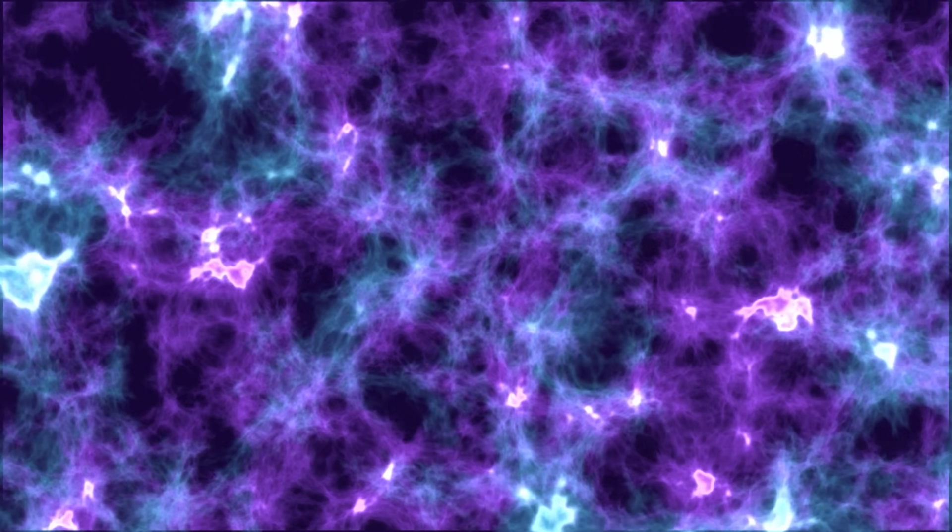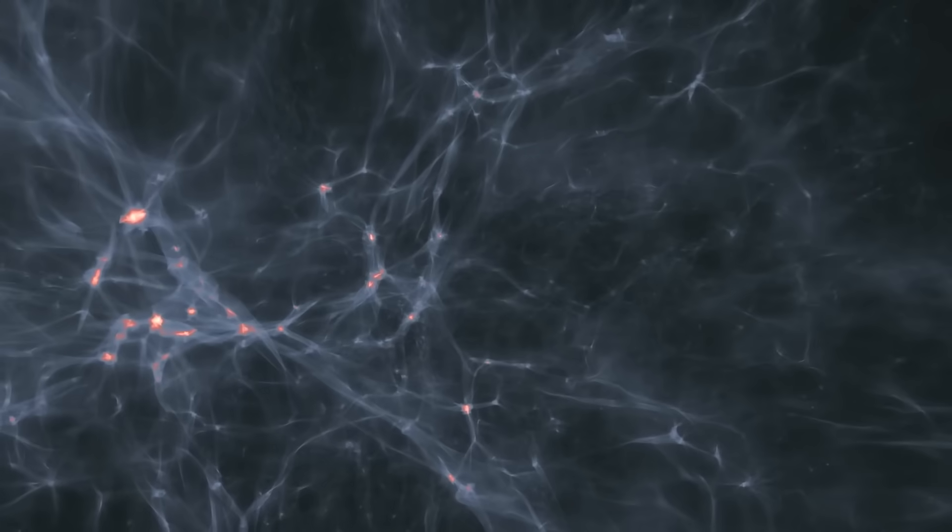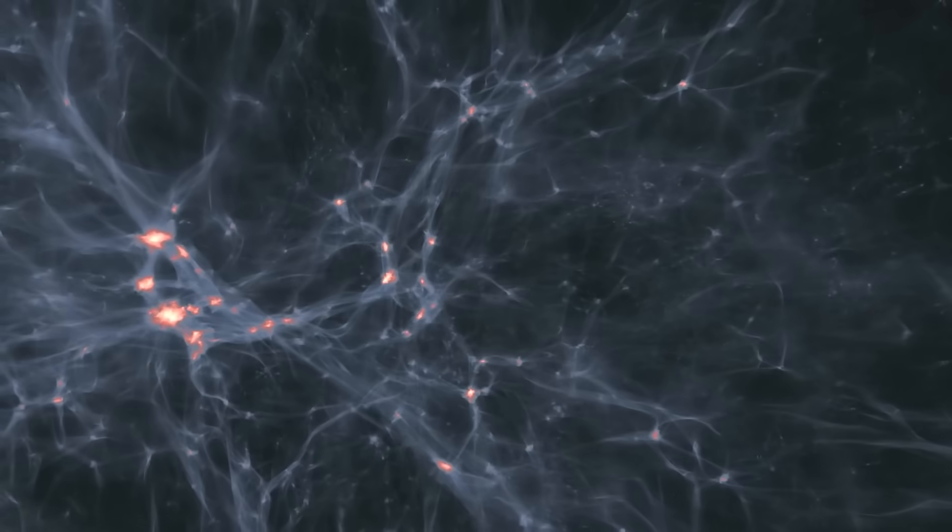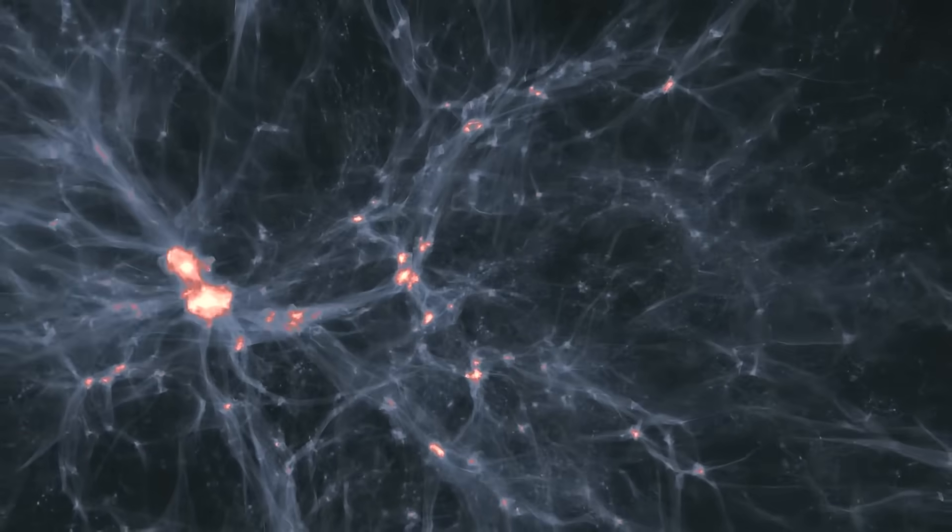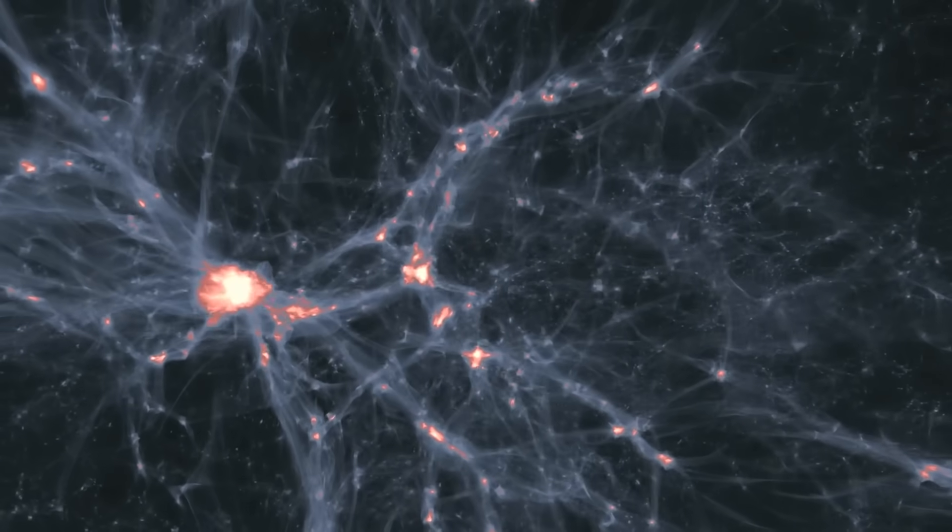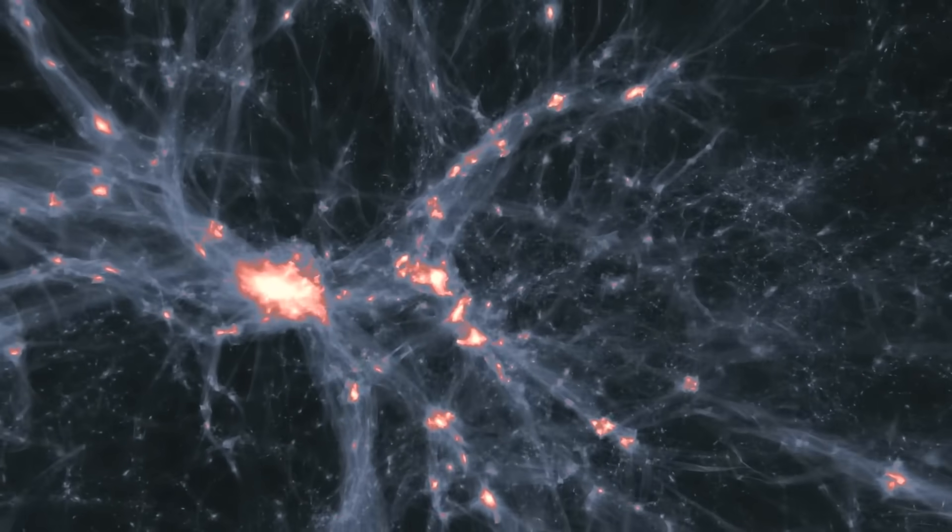So what keeps these massive web structures from flying apart? The answer is dark matter, the mysterious, invisible substance that acts like the universe's glue. Without it, the gravitational pull wouldn't be strong enough to hold these vast cosmic networks together.